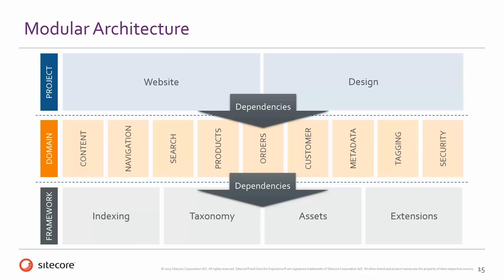In terms of coupling, the dependencies go from the top to the bottom. The most stable components are in the bottom — indexing, asset management — that hardly ever changes. The visual design, which very often changes, depends on features, and the features depend on the framework.